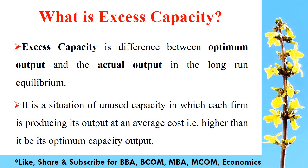In a long run equilibrium under monopolistic competition, the group is characterized by excess capacity. We can define excess capacity as the difference between the optimum output and the actual output in the long run equilibrium.